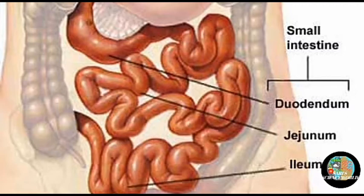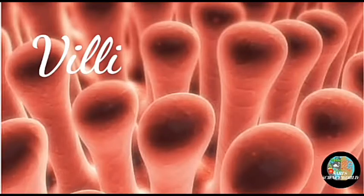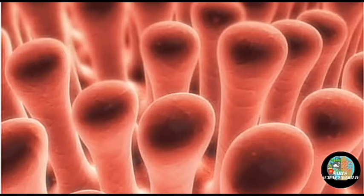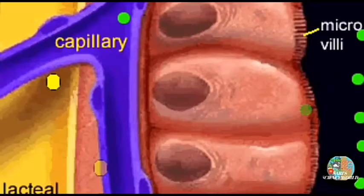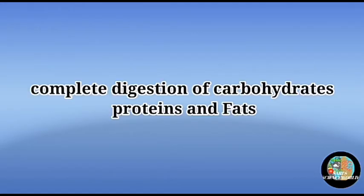The absorption of digested food takes place through the small intestinal villi — the finger-like projections present in the wall of the small intestine. These structures are called villi, and they help to absorb the food.